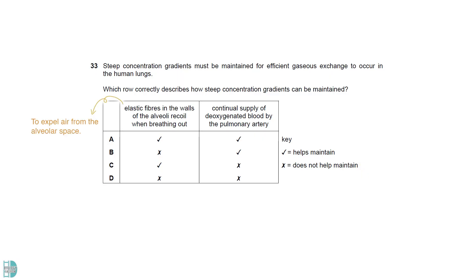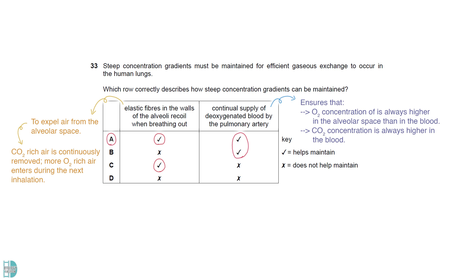Alveoli recoil to expel air from the alveolar space. This causes the carbon dioxide-rich air to be continuously removed, allowing more oxygen-rich air to enter during the next inhalation. The continuous supply of deoxygenated blood ensures that the concentration of oxygen is always higher in the alveolar space than in the blood. And the opposite for carbon dioxide.